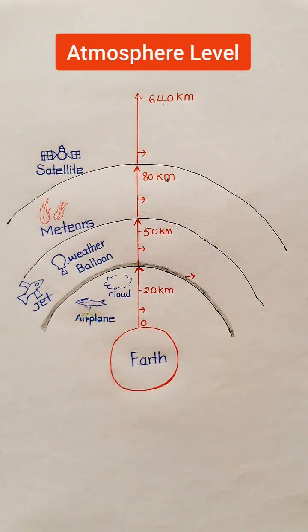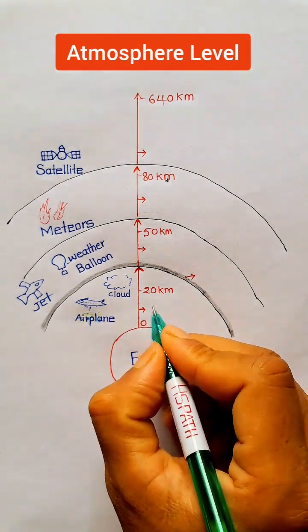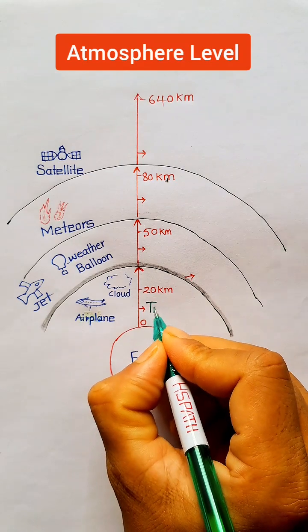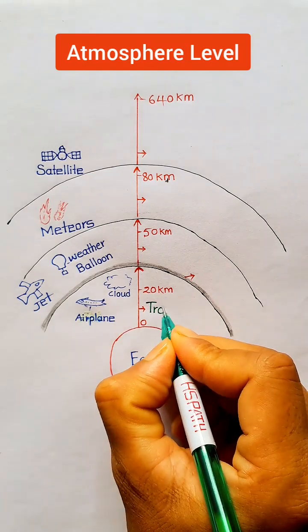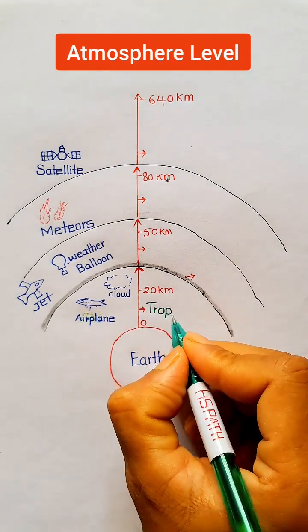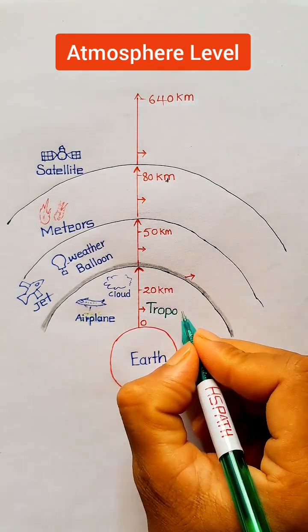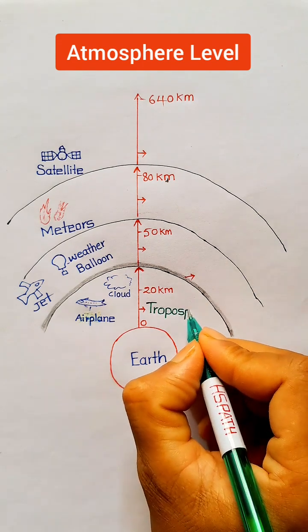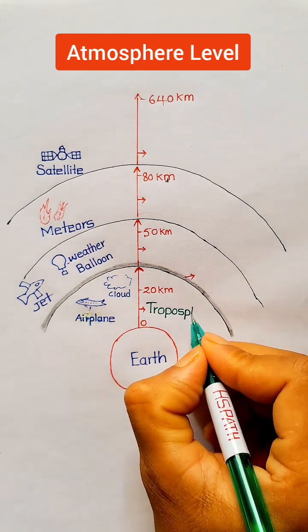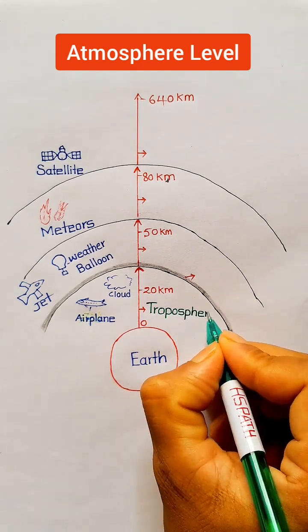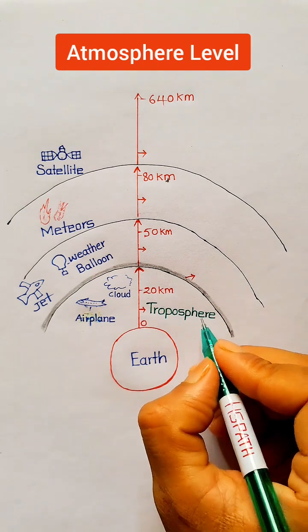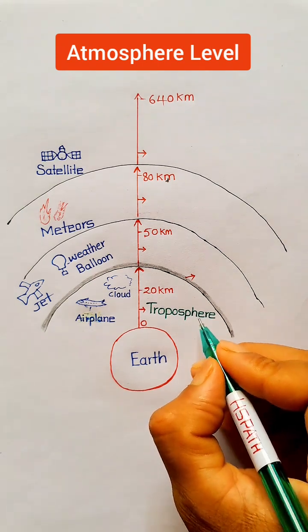At the atmosphere level, the 0 to 20 kilometer region of Earth is called the troposphere. In this region, aeroplanes fly and clouds float in the sky.